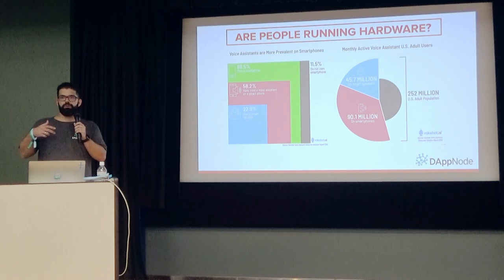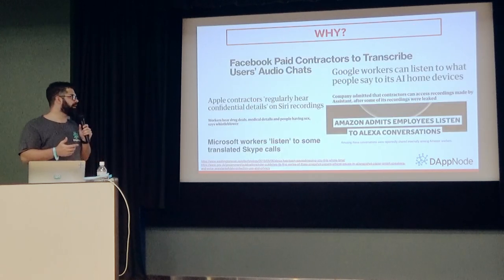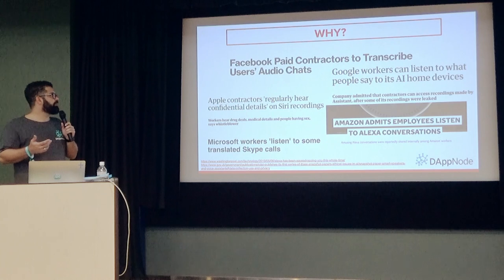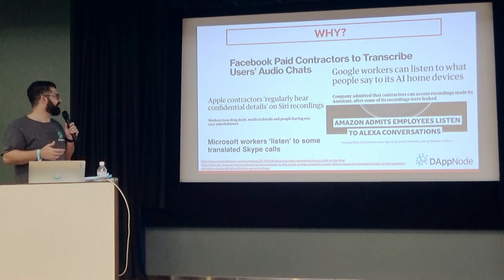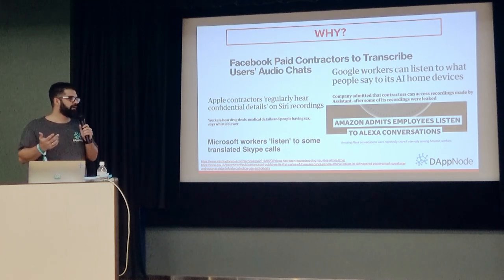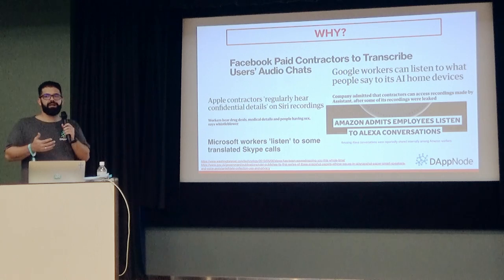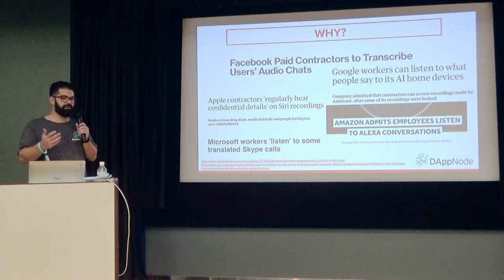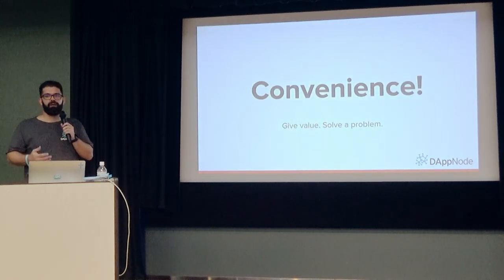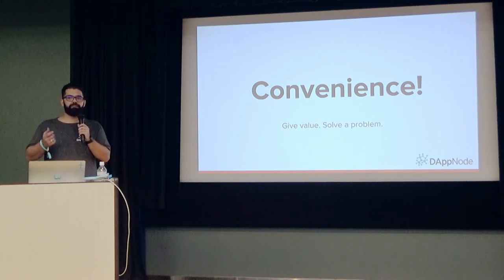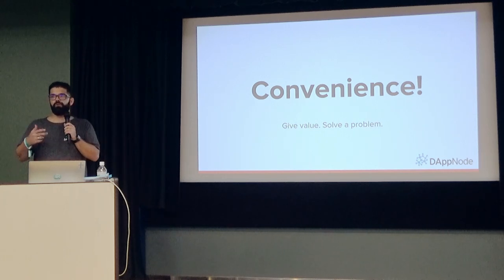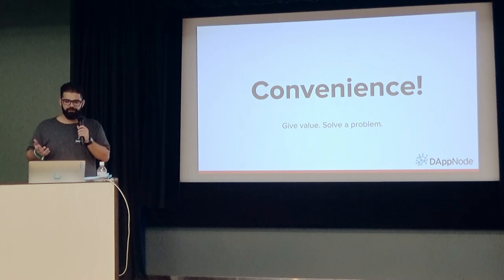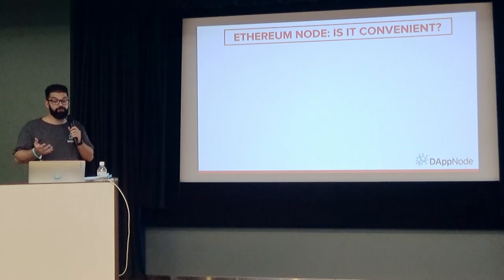Voice assistants are starting to grow a lot. But people know that these devices are not private. They use your data, they know all about you, they can listen to you. People are aware of this but they are still buying these surveillance devices and putting them at home. The question is, why? The answer is convenience. They are willing to lose privacy if you give them something convenient. They don't want to worry about spending time on computing. They only want convenience. So let's take a look at whether Web3 is convenient.